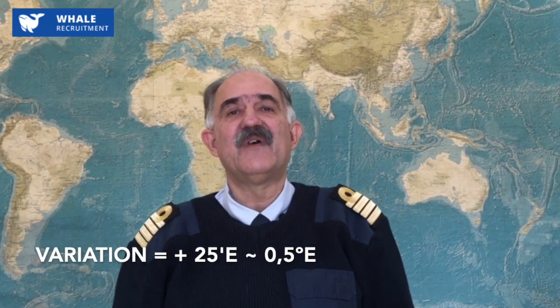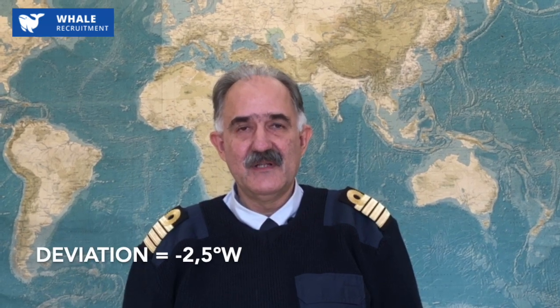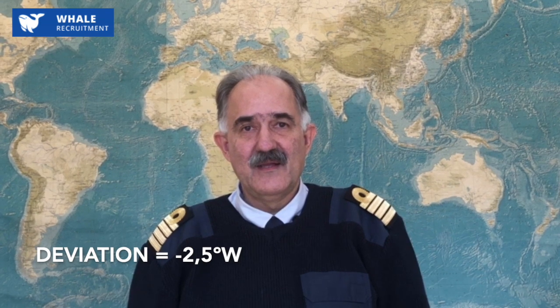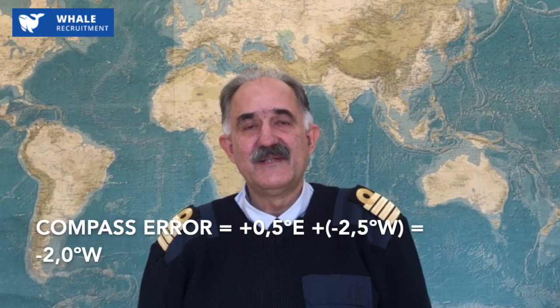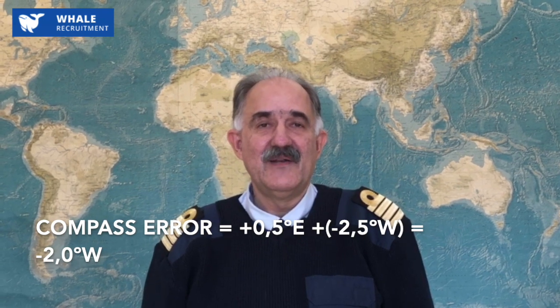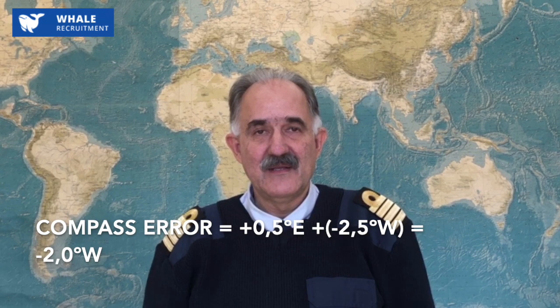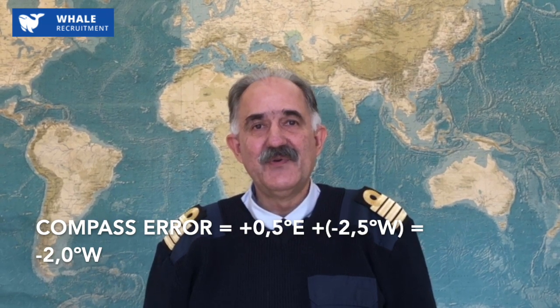Going back to our example with variation, we calculated it as 25 minutes east. We can enter the table with our course of 184 degrees, and with the help of this table we found the value of deviation to be 2.5 degrees west. Twenty-five minutes east variation equals half a degree, which is positive. We add to it the value of deviation, minus 2.5 degrees. So, 0.5 minus 2.5 gives us finally minus 2 degrees. The compass error in our particular case is 2 degrees west.